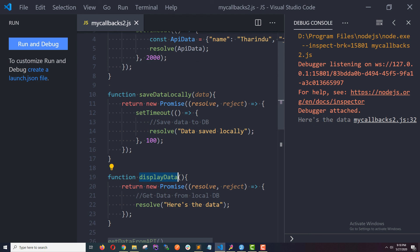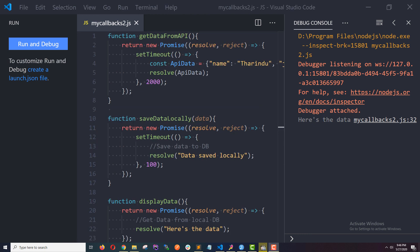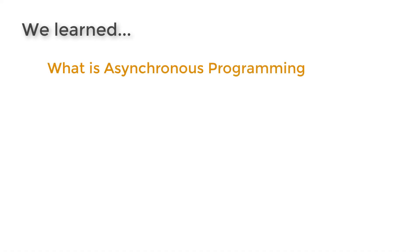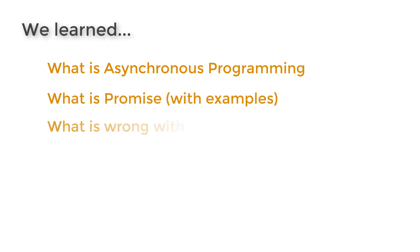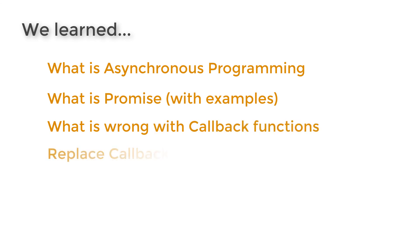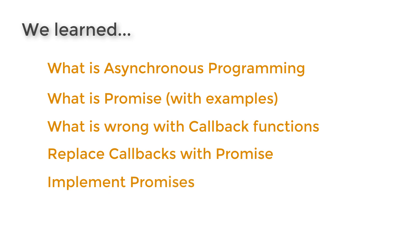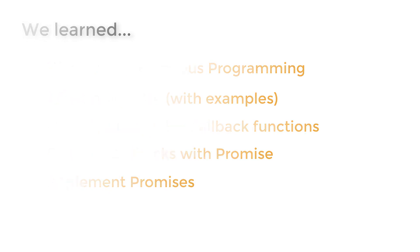That's it for promises! We learned what asynchronous programming is and what the promise concept is using real-world examples. We also learned what the big problem with callbacks is and how to replace callbacks using promises, and we implemented the same code using both approaches. I hope you enjoyed this video — hit the subscribe button if you haven't already, and we'll see you in the next video.